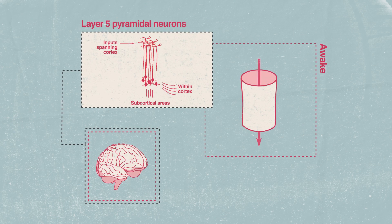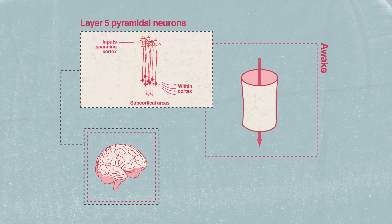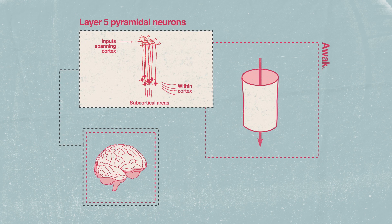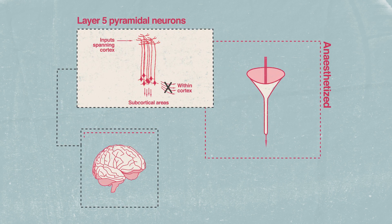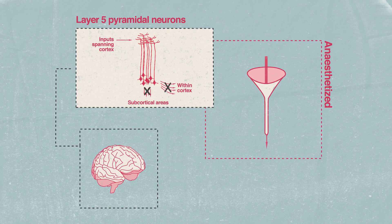However, when we are unconscious, the synchronization of activity across layer 5 pyramidal neurons restricts the information output both within cortex and from cortex to the rest of the brain.